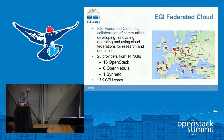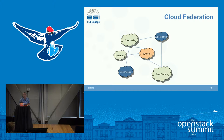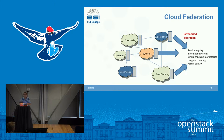The EGI federated cloud is a collaboration of communities developing, innovating, operating, and using cloud federations for research and education. It's a subset of all our resource centers — 23 providers from 14 different countries. Most of them run OpenStack: 16 of them, with six running OpenNebula and one running Synnefo, a Greek technology similar to OpenStack and OpenNebula. Right now we have around 7,000 CPU cores.